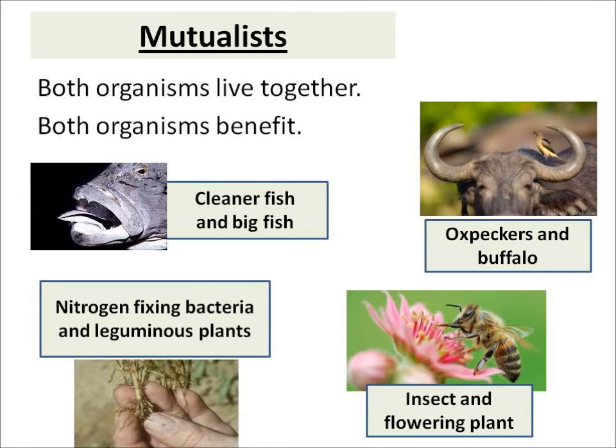Oxpeckers are birds that pick the fleas off buffalo, so they get some food and the buffalo has its coat groomed. Insects and flowering plants: the insect gets the nectar from the flower, and the flower in return gets pollinated.